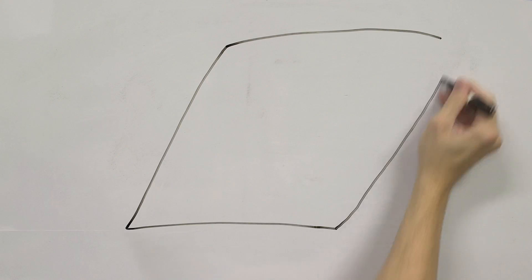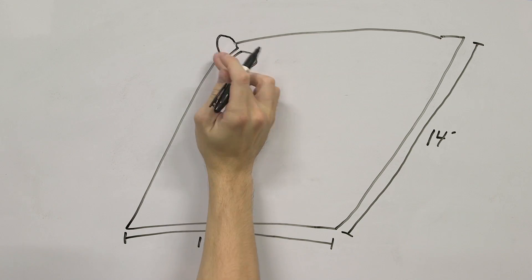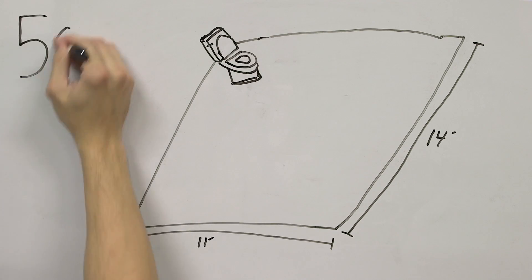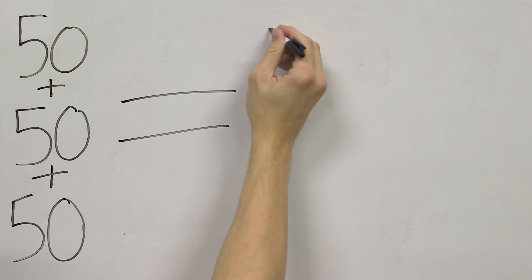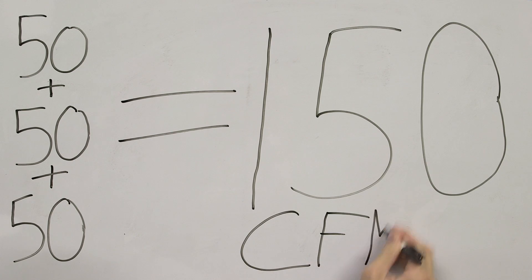A bathroom that is 11 foot by 14 foot would need to be sized by fixtures. This example bathroom has 1 toilet, 1 shower, and 1 tub, which would equal 150 CFM, and you would need a fan of 150 CFM or above.